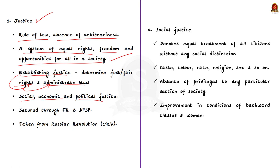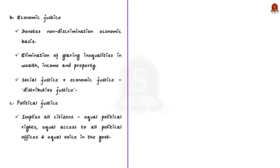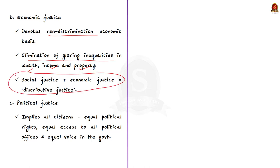Social justice denotes the equal treatment of all citizens without any social distinction based on caste, color, race, religion, sex and so on. It means absence of privileges being extended to any particular section of the society and improvement in the condition of the backward classes and women. Coming to economic justice — it denotes the non-discrimination between people on the basis of economic factors. It involves the elimination of glaring inequalities in wealth, income and property. Note that a combination of social justice and economic justice denotes what is known as distributive justice.